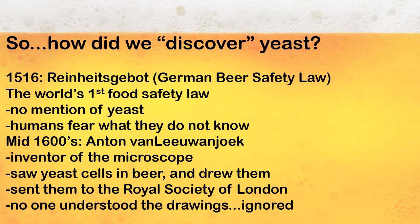Did we discover yeast? Actually, yeast was here from probably the early beginnings of the planet — we said 2 billion years ago. A better question is how did we get to know about yeast. Way back in 1516, the Germans wrote the first food safety law the world knew, because they were trying to keep their beer safe. It was essentially a set of rules of do this and don't do that, but it made no mention of yeast, because we didn't know what yeast was at the time.